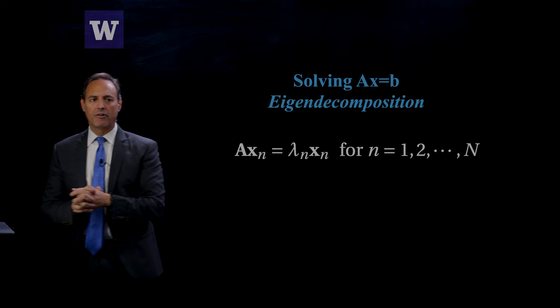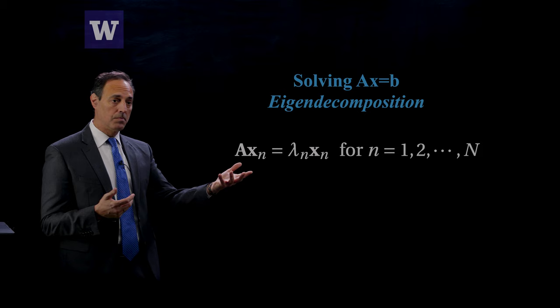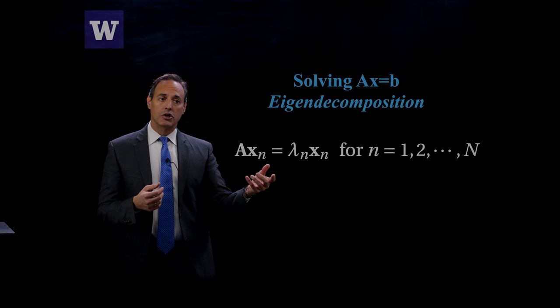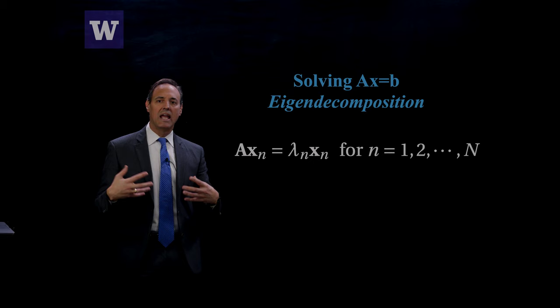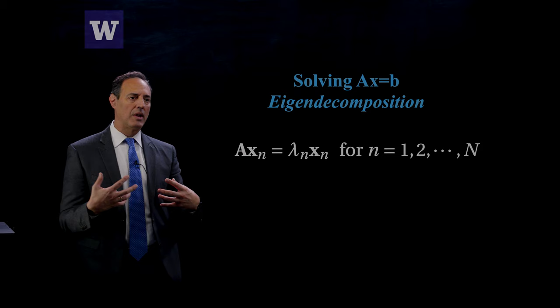We've often played around and found eigenvalues and eigenvectors of a matrix. Suppose here they are: Ax_n equals λ_n x_n. The x_n are the eigenvectors and the λ_n are their corresponding eigenvalues, where n goes from 1 to N. We're assuming here that A is some N×N matrix, and let's assume we have a Hermitian matrix.